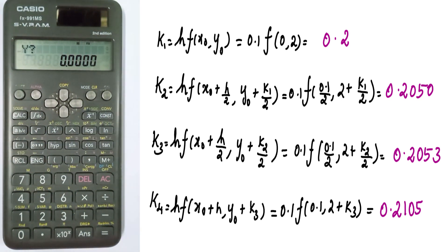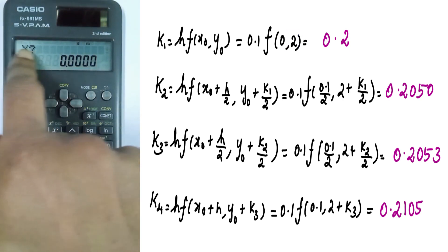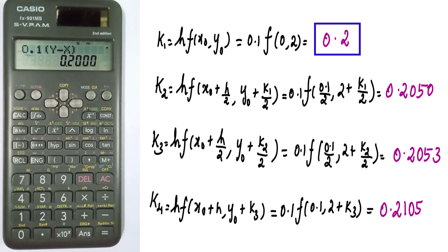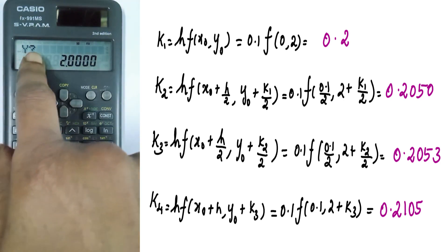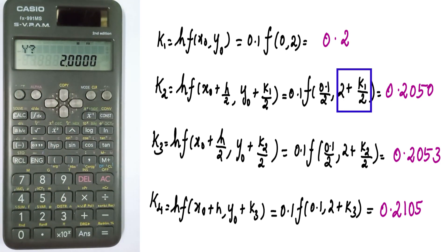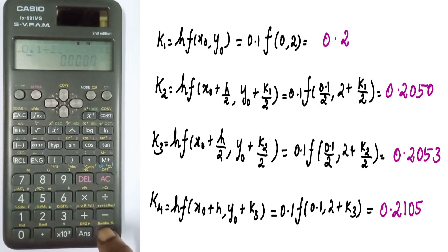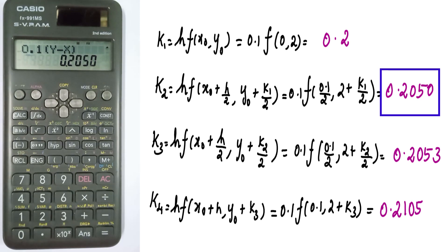For k1, enter y value as 2 and x value as 0. So k1 answer is 0.2. For k2 calculation, press CALC again. Enter y value as 2 plus k1 divided by 2. K1 is the previous answer, so press the answer button divided by 2. Then enter x value as 0.1 divided by 2. K2 answer is 0.2050.